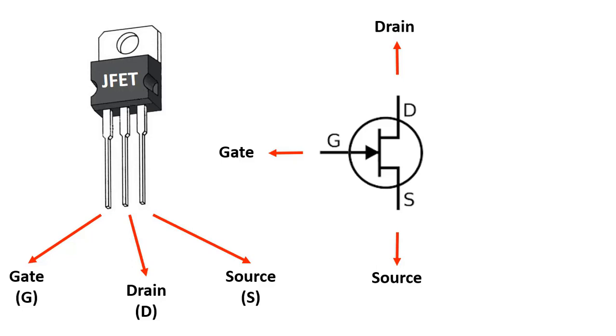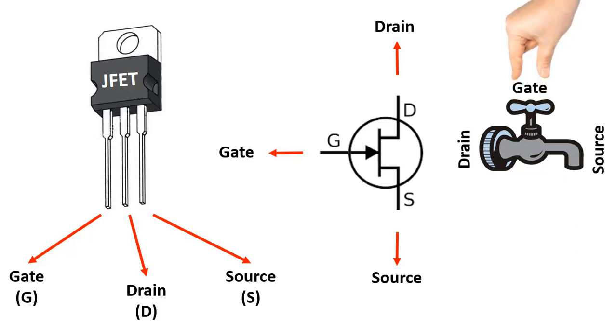We can compare the JFET transistor to a faucet. The valve of the faucet is gate, and the direction of water is between drain and source. In other words, while controlling the current in the transistor, we can control the flow of water in the faucet. When we open the valve, we control the water.